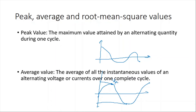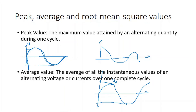The average value of an oscillation is the average of all instantaneous values over one complete cycle. Over one complete cycle, all positive voltage values and all negative voltage values cancel each other out when summed. So the average value of this sine function is equal to zero.